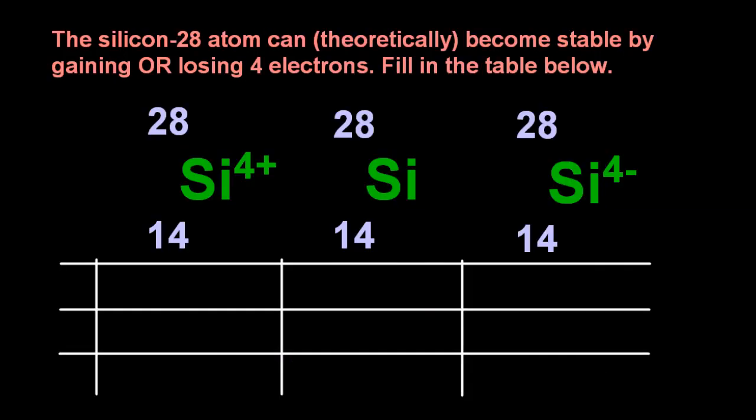silicon-28 atom can theoretically become stable by gaining or losing four electrons. Let's fill in the table. So E, P, and N for electrons, protons, and neutrons.